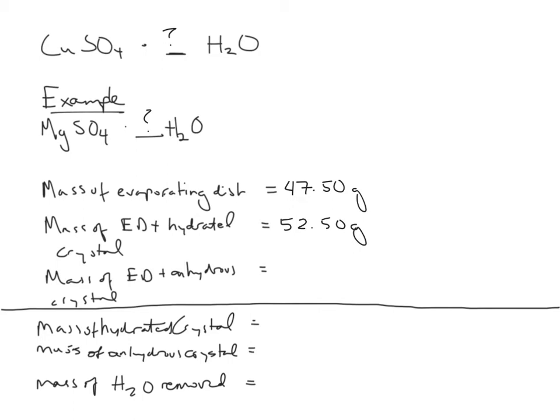And then the mass of the evaporating dish and anhydrous crystal, that is after you have heated it and reheated it and gotten a final mass. So it should be somewhere greater than the mass of your evaporating dish but less than that of your hydrated crystal. And for magnesium sulfate, if we do this, the number would work out at 49.94 grams. That's the data I'm making up for magnesium sulfate.